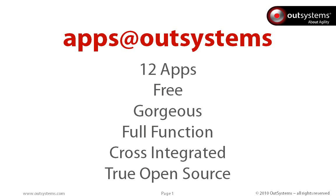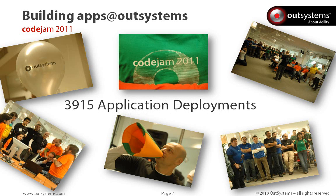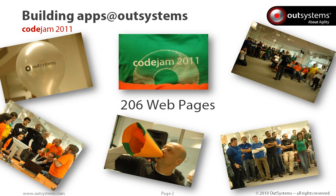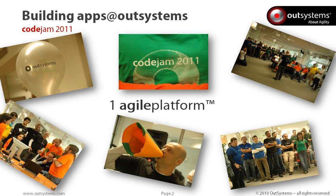We've actually decided to make these apps in a truly unique way — building these apps was a big event for our systems. Nine of these apps were built in what we call the Code Jam. During this event we essentially built the equivalent of nearly one million lines of code in total across our multiple development environments and applications. 3,915 different versions of the applications were published, we created a total of 206 web pages and 60 database tables for these nine apps — all with no more than 41 developers across two and a half days, and one agile platform.